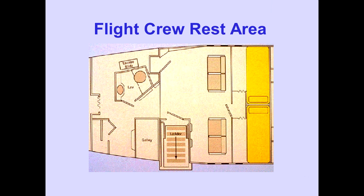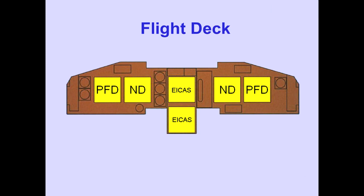The flight deck provides six cathode ray tubes, or CRTs, to display flight information, airplane systems, navigation, engine, and crew alerting information.